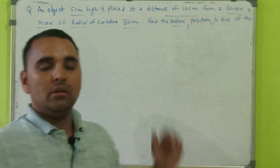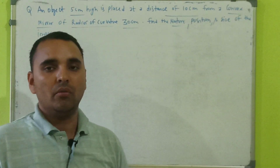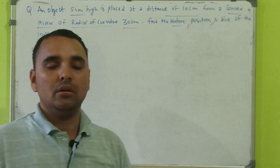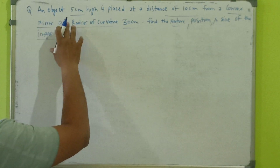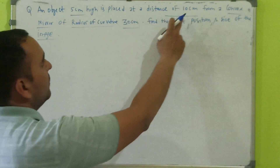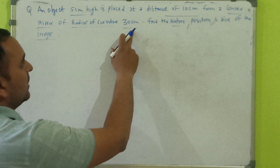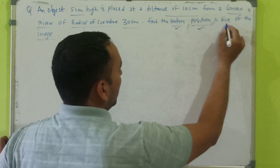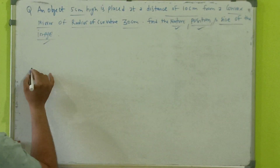Hello everyone. Here I have brought one numerical question that is based on the convex mirror formula. This portion is in chapter Light of Class 10 Science. The question is: an object which is 5 centimeters high is placed at a distance of 10 centimeters from a convex mirror of radius of curvature 30 centimeters. Find the nature, position, and size of the image.